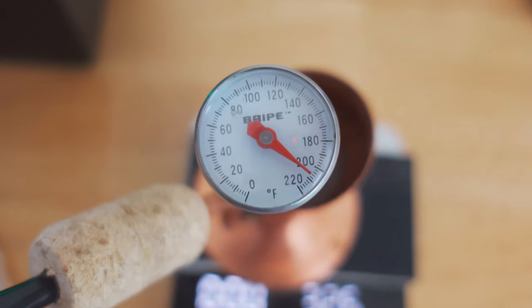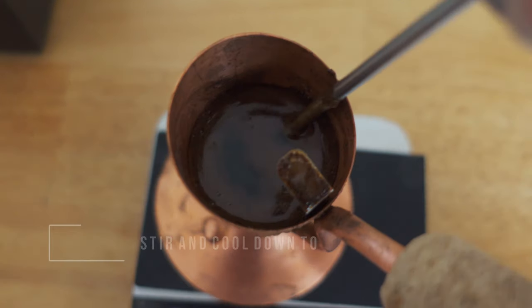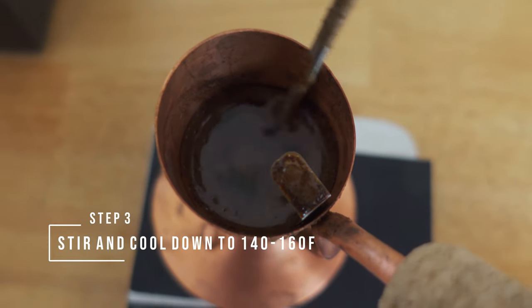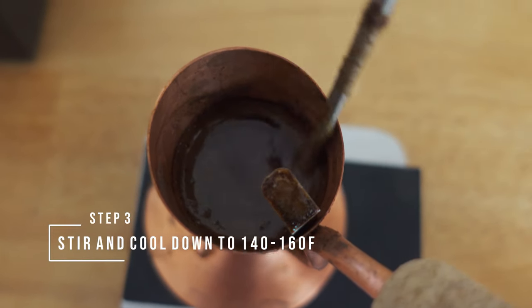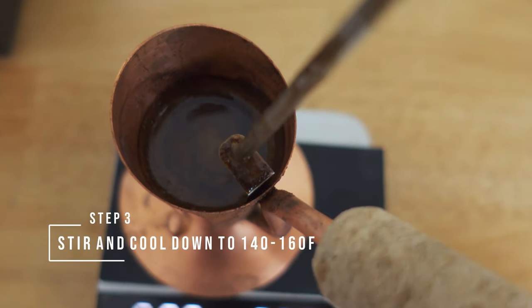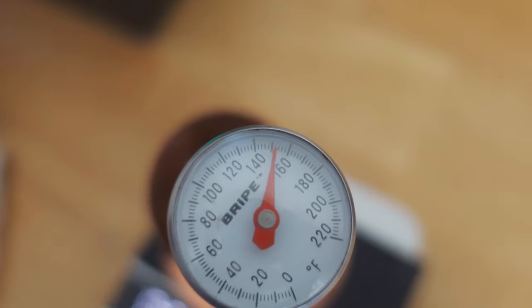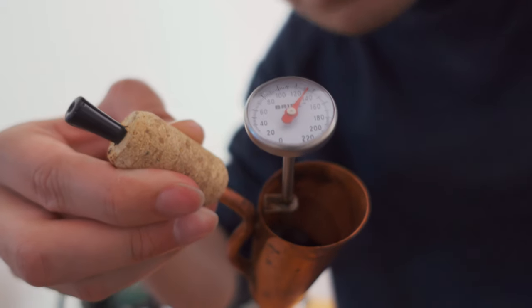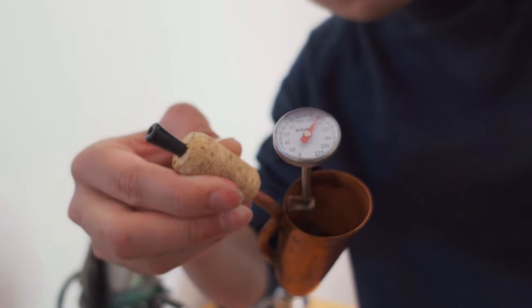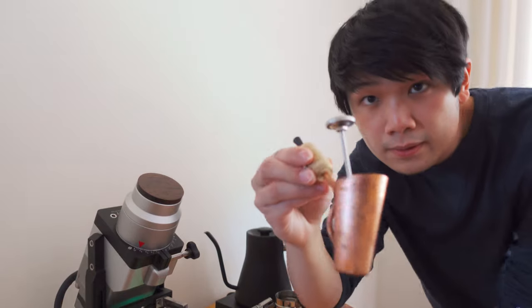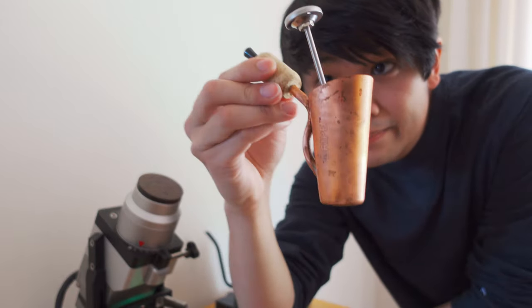Once everything is heated up, give it a nice stir. I then like to let my brew cool down to about 160 to 140 degrees Fahrenheit. I've found the really finer grinds for the bripe and hotter temperatures allow me to extract the most out of medium to light roast coffees.